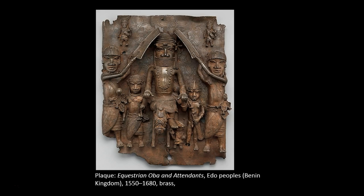However, the sequence of the plaques is lost to us since they were long held in storage when found by Westerners in the 19th century. You may notice that the oba rides side saddle on horseback, which would seem to indicate a connection to oba Esigie (E-S-I-G-I-E), who ruled circa 1504 to 1550. He was the first oba to travel by horse. However, without knowing the original order of the plaques, we will never know for certain whether this is Esigie or a later oba who emulated his mode of travel.